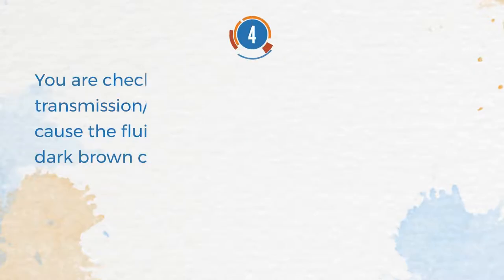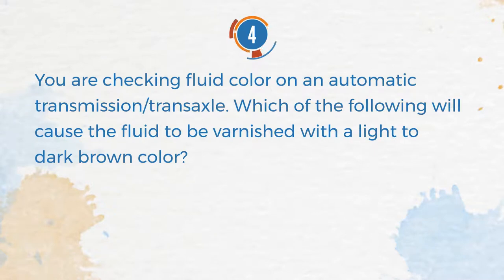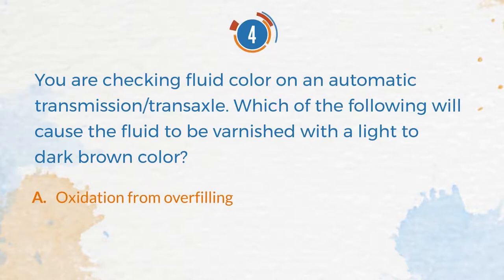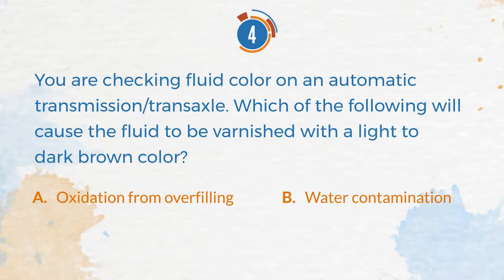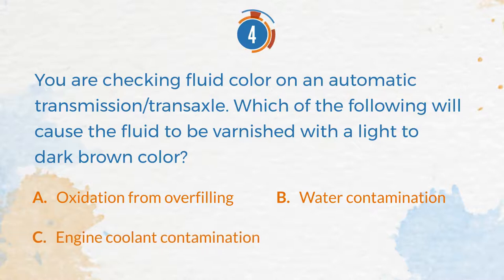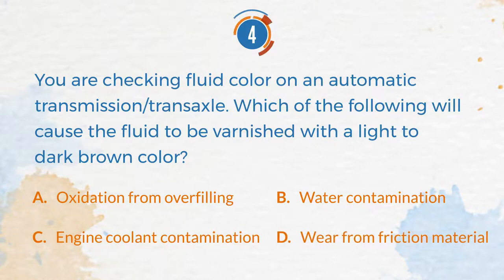Number 4. You are checking fluid color on an automatic transmission or transaxle. Which of the following will cause the fluid to be varnished with a light to dark brown color? A. Oxidation from overfilling. B. Water contamination. C. Engine coolant contamination. D. Wear from friction material.